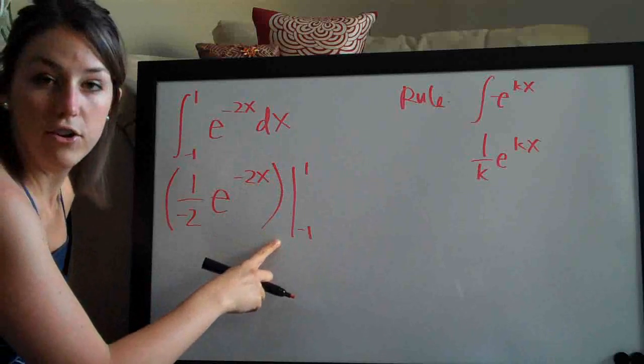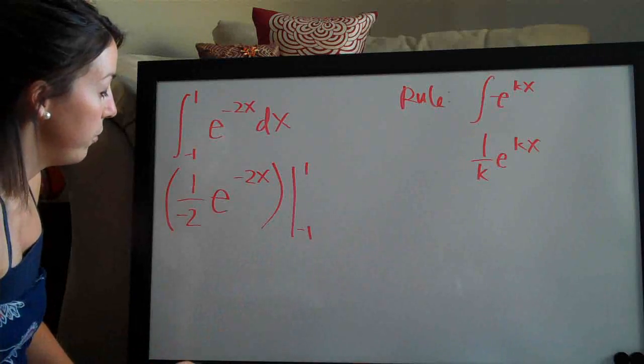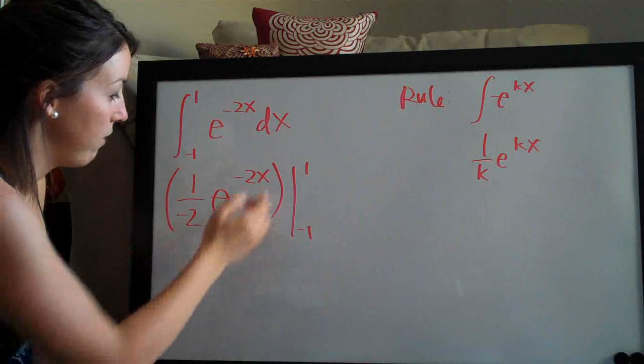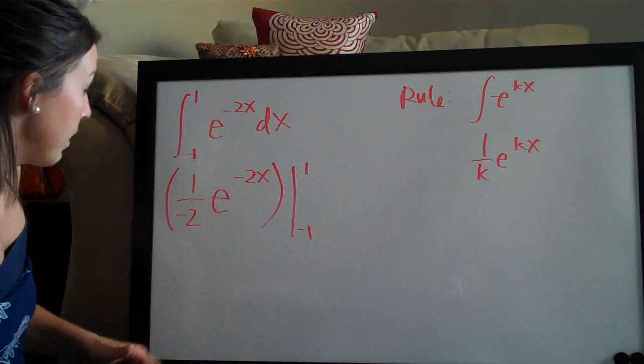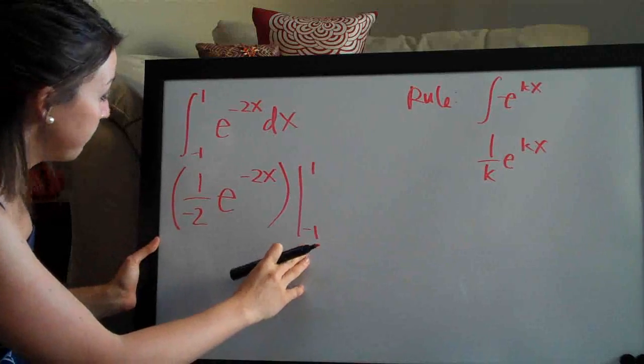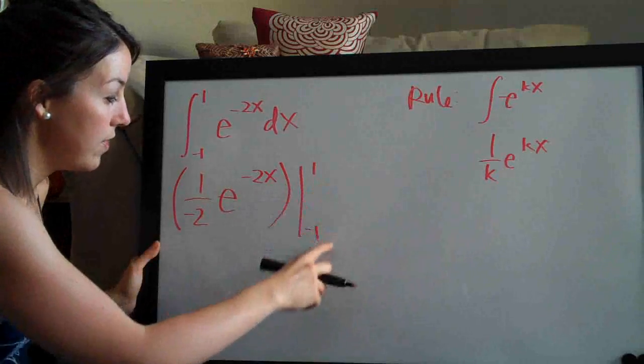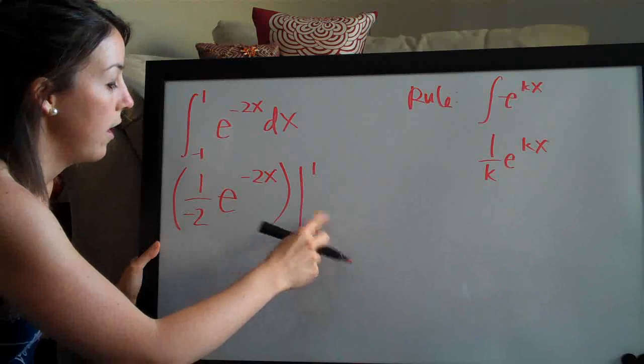And this is shorthand notation which basically tells you evaluate on this range, everything here to the left of this vertical line. So the way that we evaluate, first we plug in the number on the top and then we plug in the number on the bottom and we subtract.